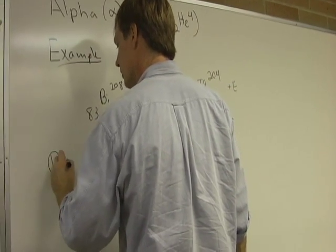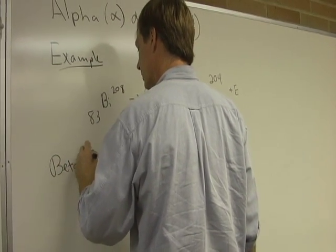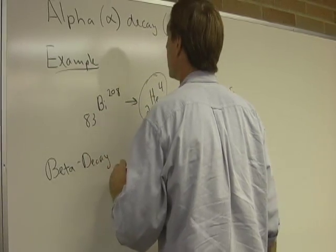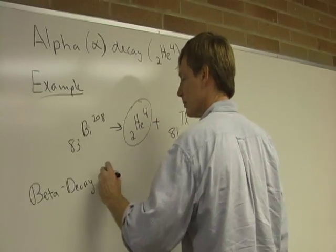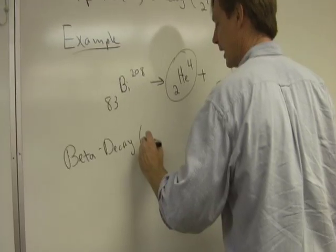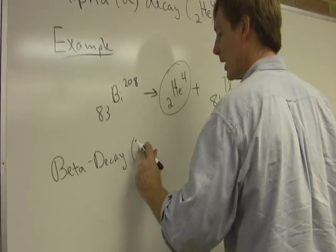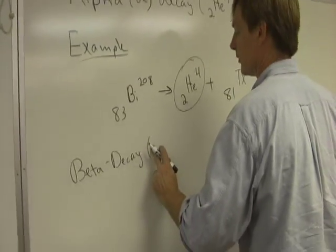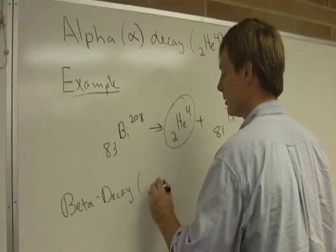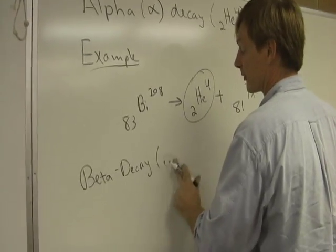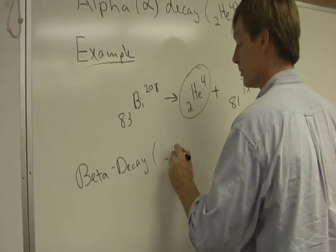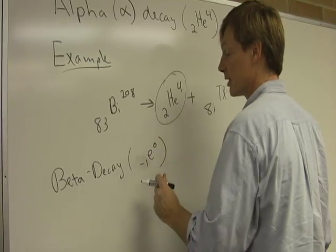Let's see. Beta radiation. Beta decay. Beta decay is the decay of an electron. I think that's a minus 1. Electrons are kind of strange.